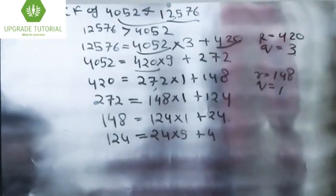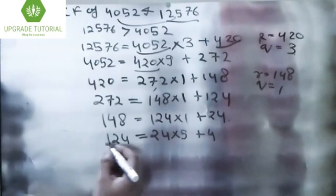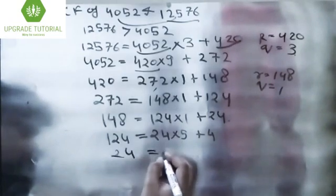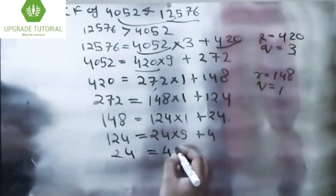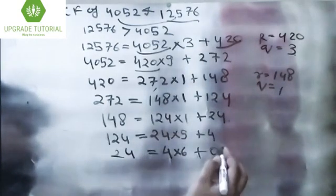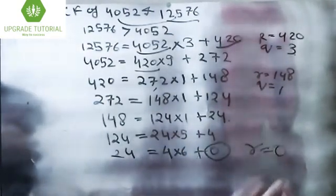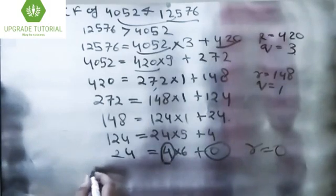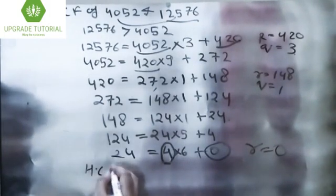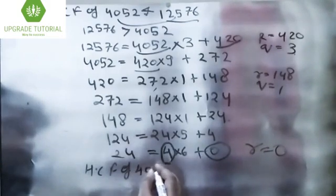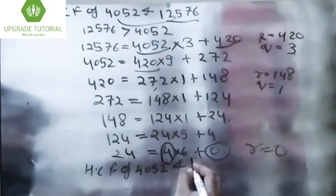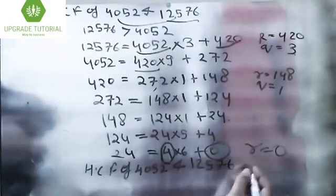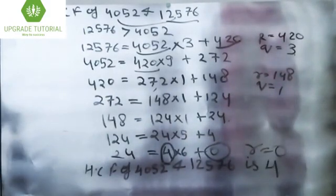Again 124 = 24 × 5 + 4. The remainder is 4 and the quotient is 5. Again 24 = 4 × 6 + 0. Since the remainder becomes 0, the last value of b is 4. So the HCF of 4052 and 12576 is 4. Thank you, I hope you will like this session.